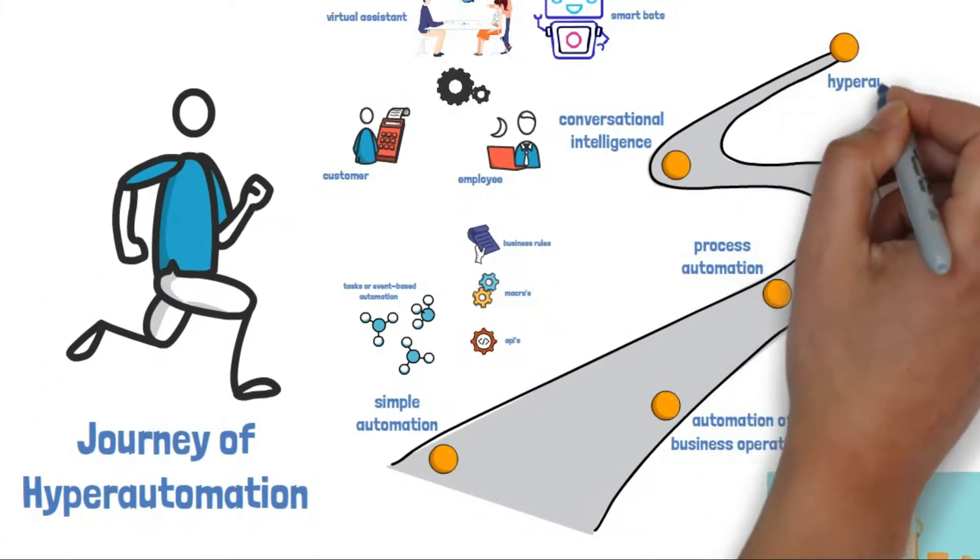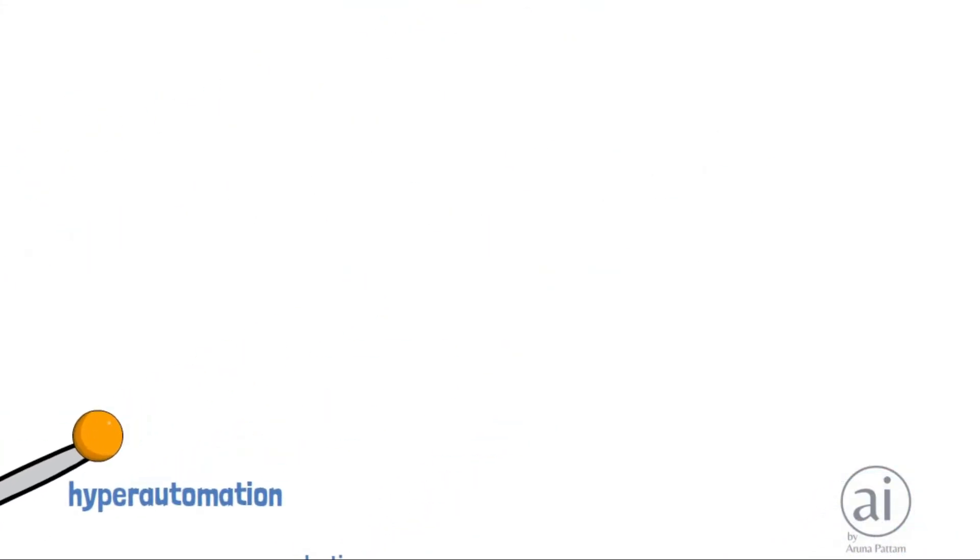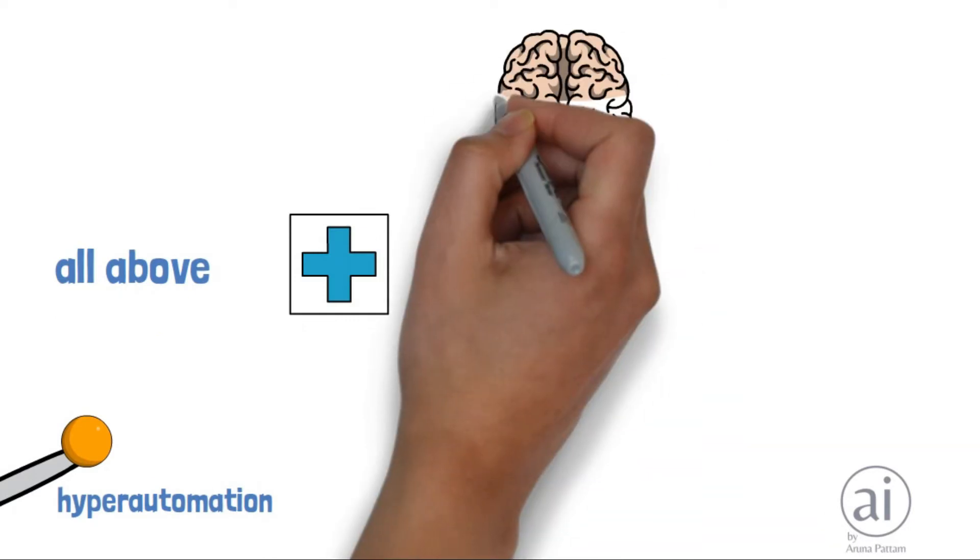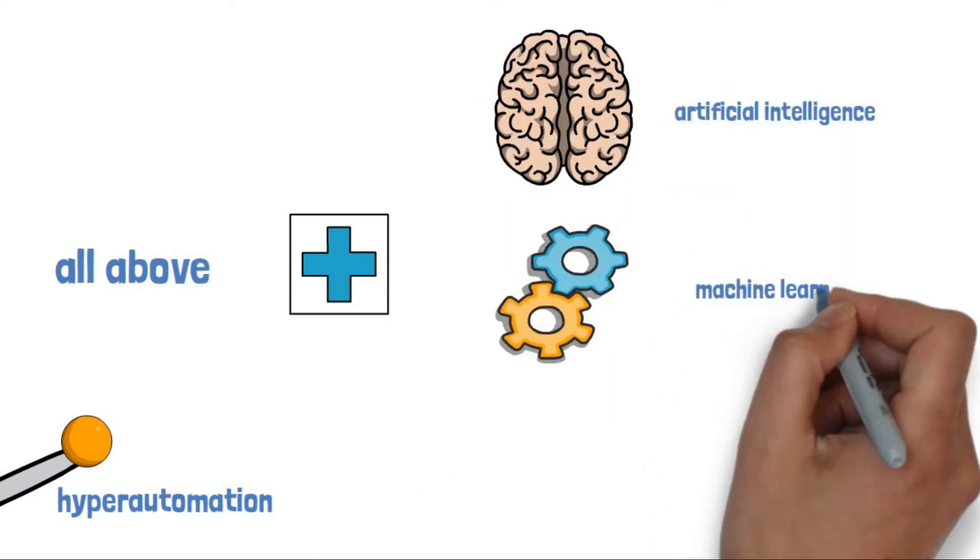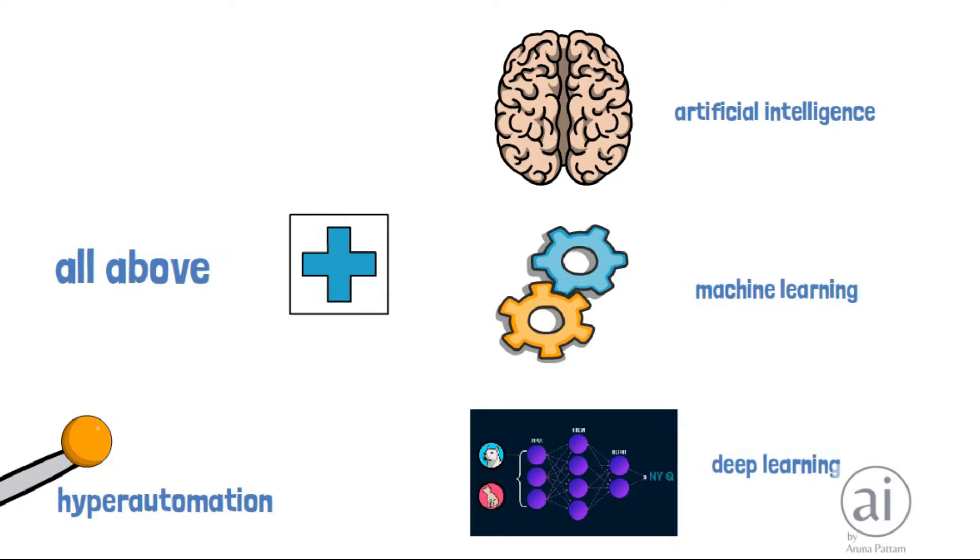Finally, hyper-automation, which is a combination of all the above, plus artificial intelligence, machine learning and deep learning to automate processes. This is still in its early stages, but has great potential.